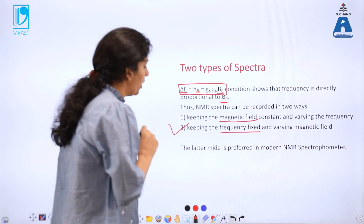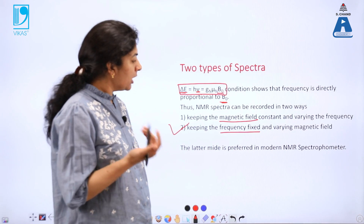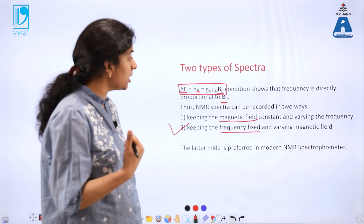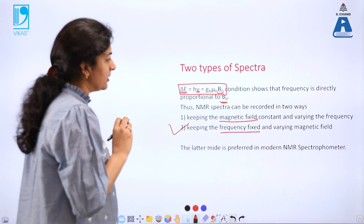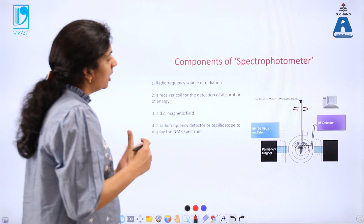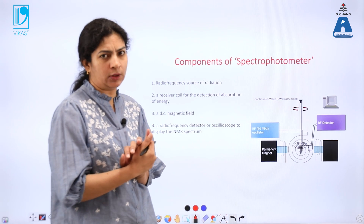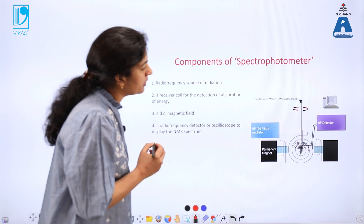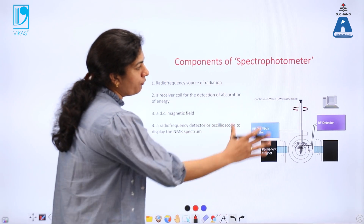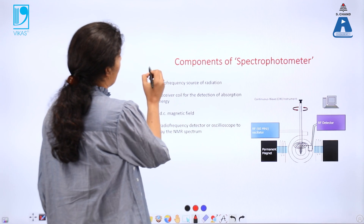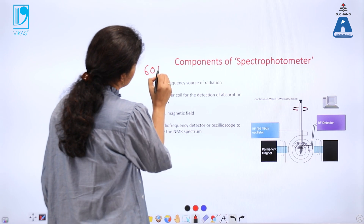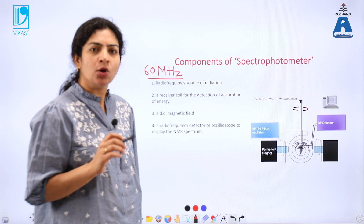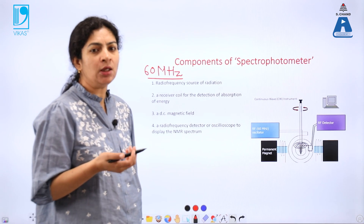The way of recording the NMR spectrum at constant frequency is usually preferred. Therefore, the NMR spectrophotometers we use typically work at a constant frequency. We can see here that this spectrophotometer works at a constant frequency of 60 megahertz, and we vary the strength of the magnetic field accordingly.